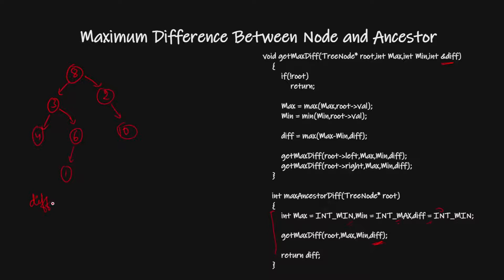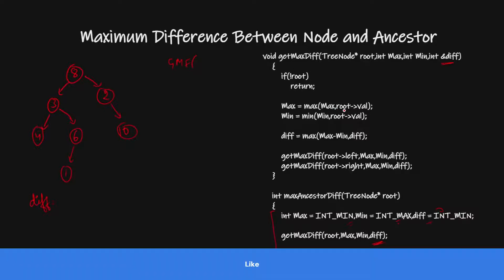Let's show it with a dry run. I am calling getMaxDifference. If my root is null, I will return. Otherwise, first of all I will check what is my current maximum in this path and what is my current minimum.